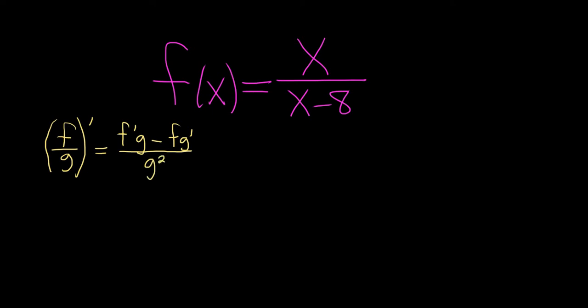If you want to relate it to the product rule, you can think of f as the first and g as the second. So it's the derivative of the first, times the second, minus the first, times the derivative of the second, over the second squared. Recall the product rule is almost the same — derivative of the first times the second, plus the first times the derivative of the second. So it's the same except the product rule has a plus and you're not dividing, whereas here you have a minus and you're dividing.